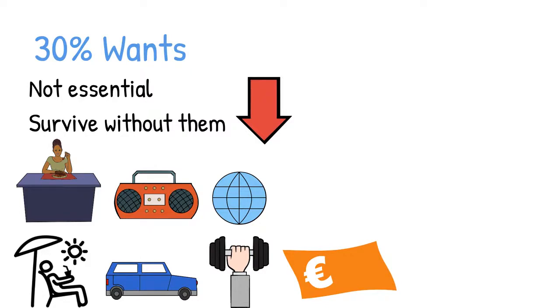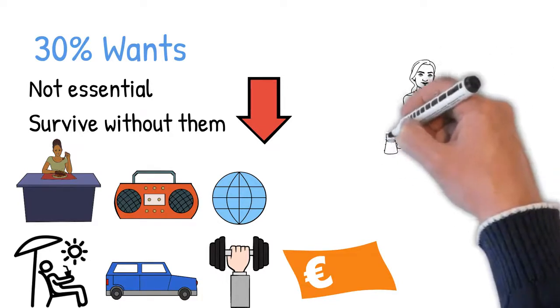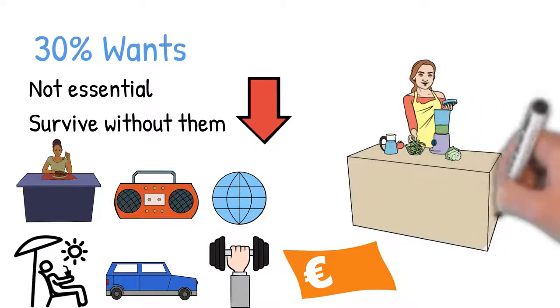But still, if your needs are more than 50%, then you have the option of cutting down on the wants. For example, you can cook at home instead of dining out. That will mean a more significant share for the needs than the wants.